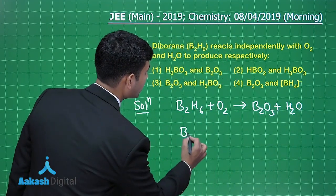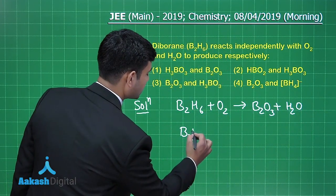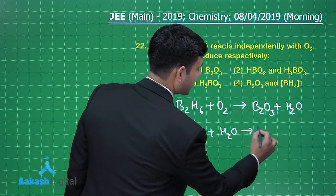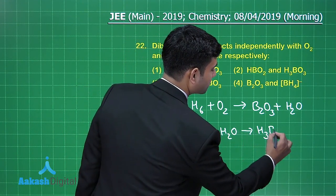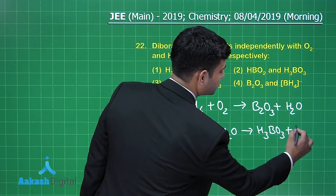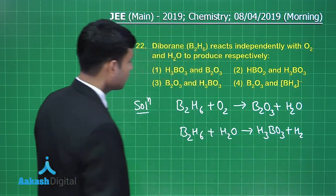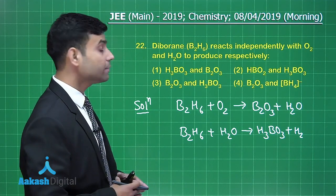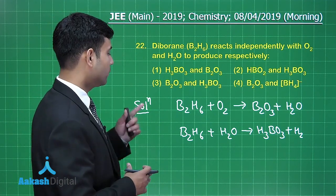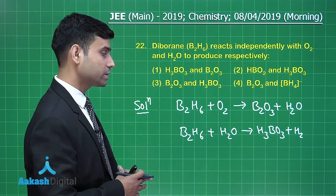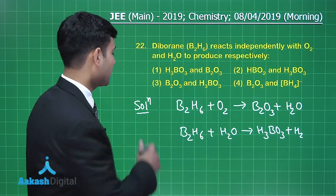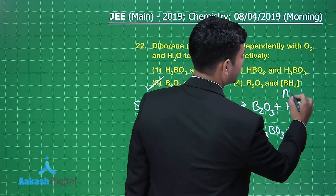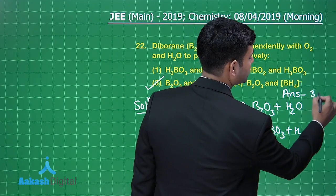On the other hand, when B2H6 reacts with H2O, it gives us H3BO3 plus H2. So going through the options: with oxygen it gives B2O3, and with water it gives H3BO3. The correct answer is option 3.